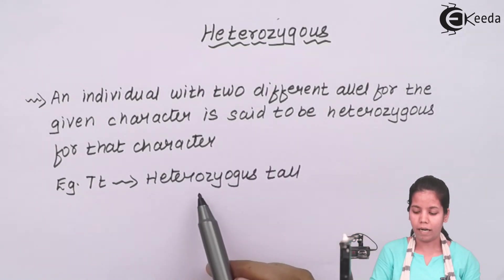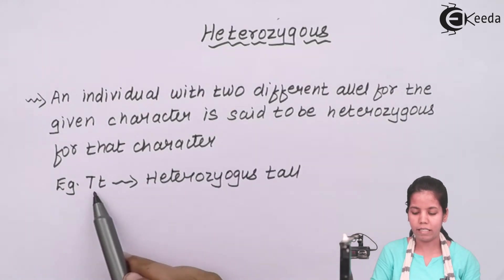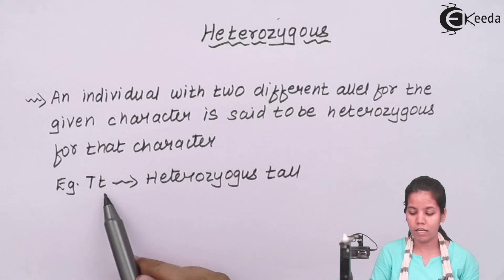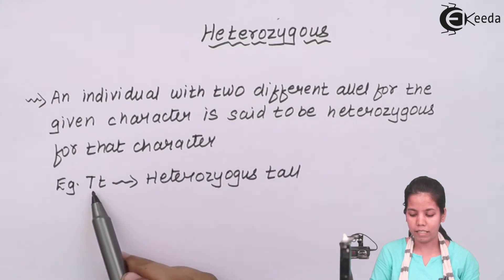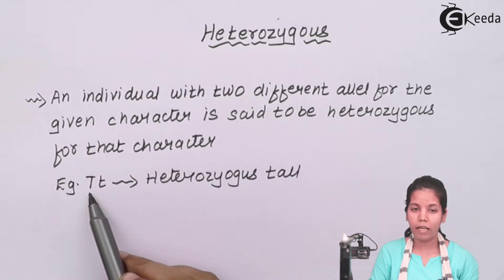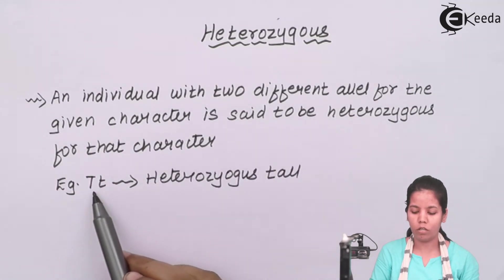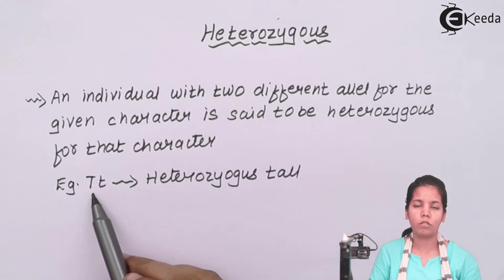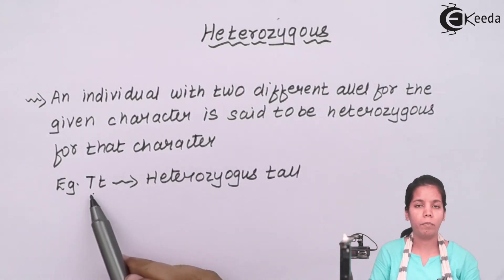In Mendel's T plant, what heterozygous meant was capital T and small t. In this heterozygous combination, capital T was always the tall plant. So if there is a heterozygous characteristic, the plant will always show taller growth — it will be taller in phenotypic appearance when you observe the plant.